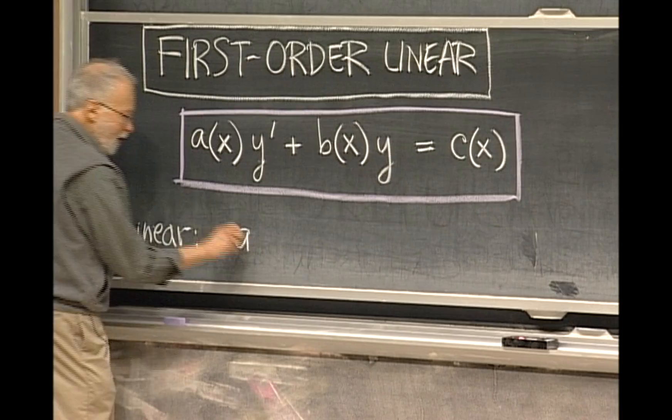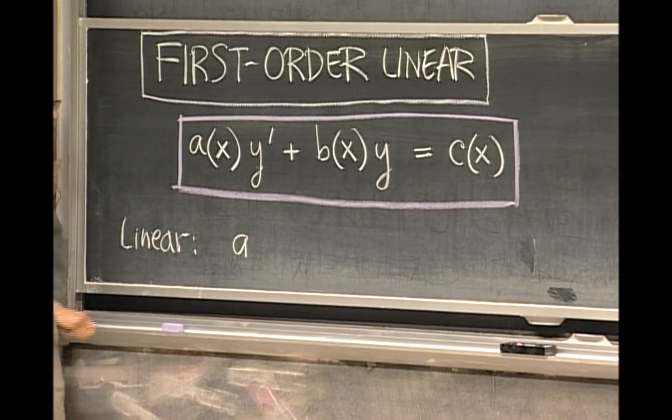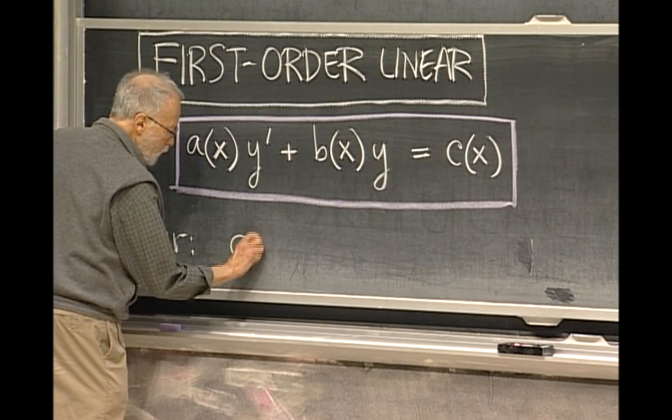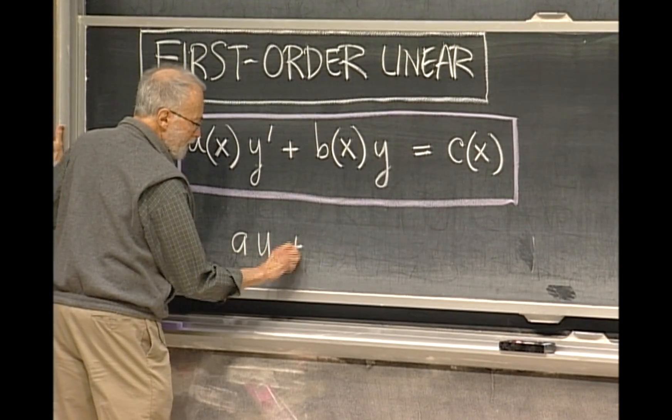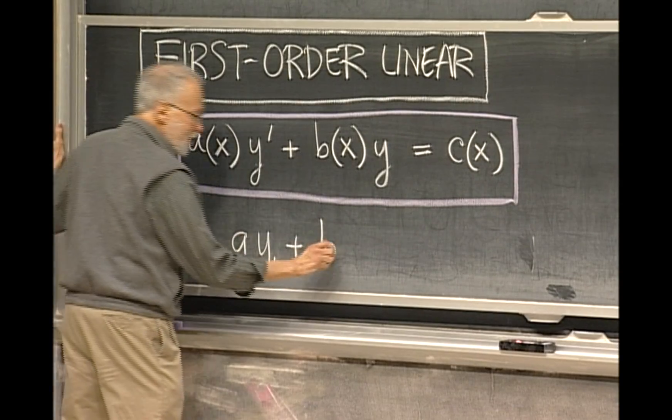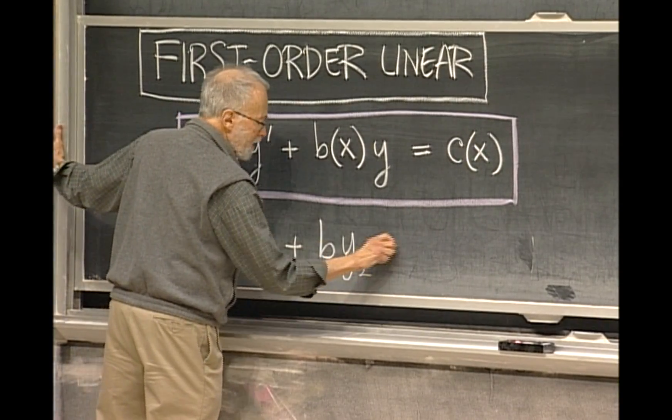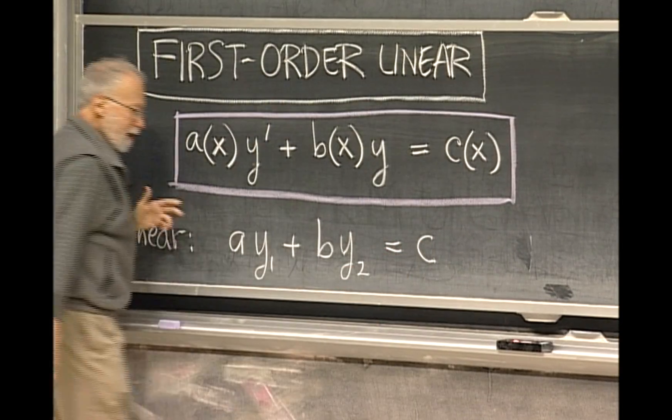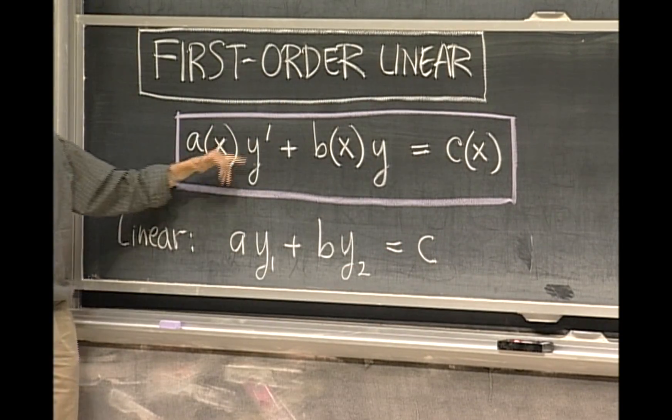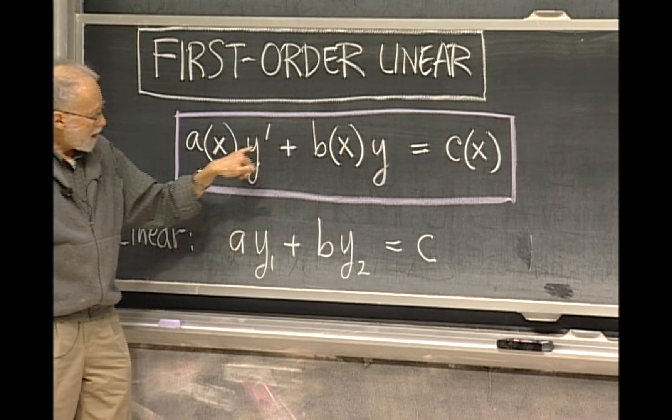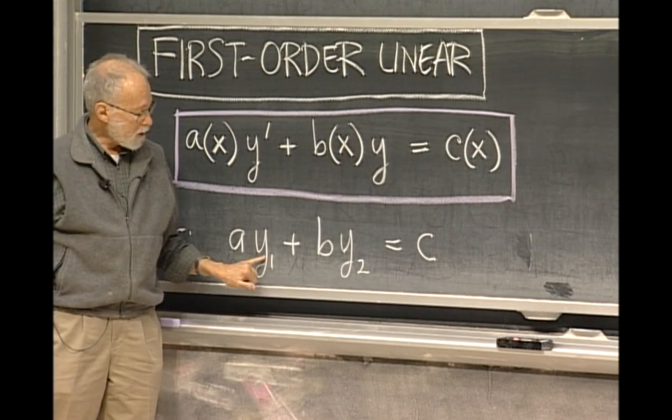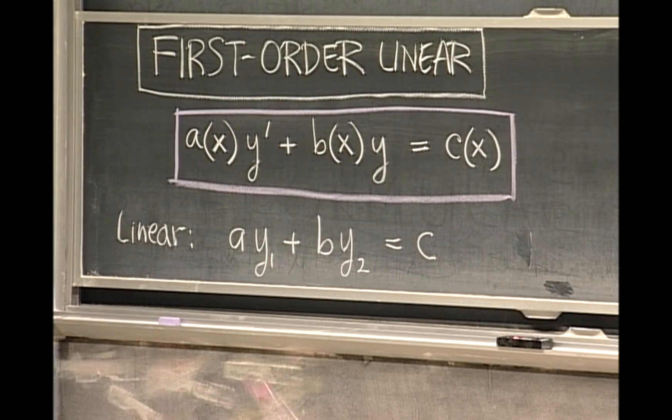The most closely analogous thing would be a linear equation like the kind you studied in high school, which would look like this: it would have two variables and constant coefficients equal to c. Now that's a linear equation, and that's the sense in which this is linear. It's linear in y prime and y, which are the analogs of the variables y1 and y2.